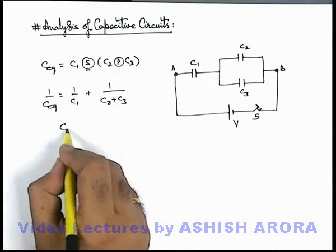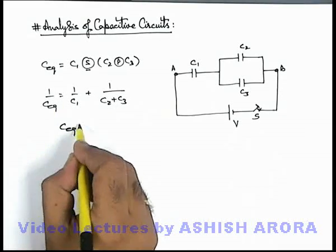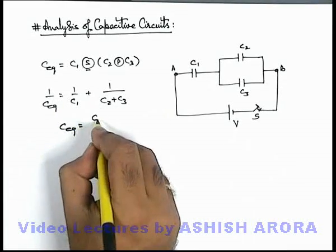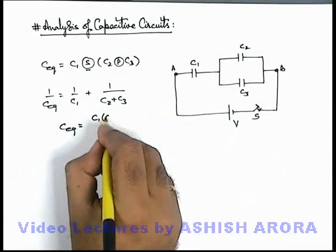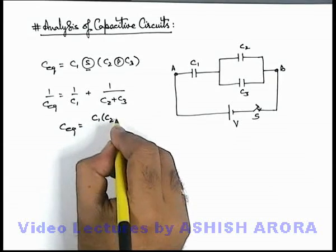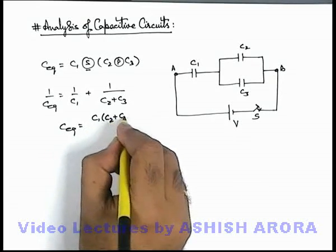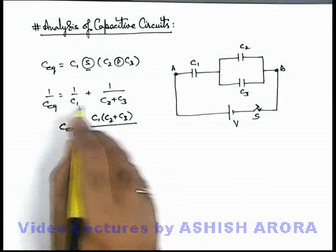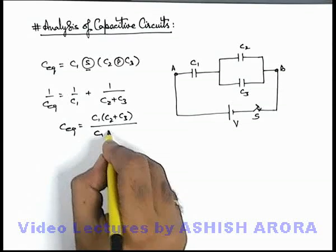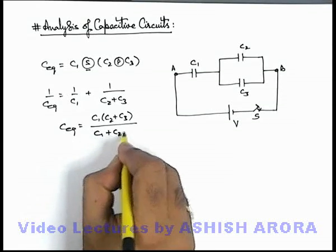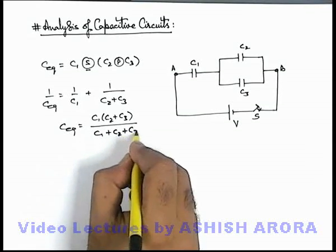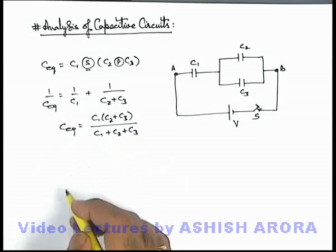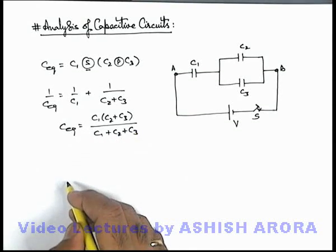C equivalent is equal to C1 in series combination with C2 in parallel combination with C3. For series combination we can write: 1/C_eq = 1/C1 + 1/(C2 + C3), because the parallel combination of C2 and C3 gives equivalent capacitance C2 + C3. So C_eq = C1(C2 + C3) / (C1 + C2 + C3). This is the way we calculate the equivalent capacitance.